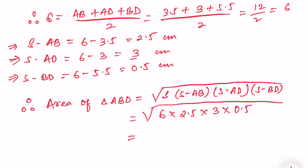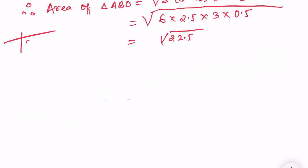If you find out the area, S here is given to be 6 into S minus AB is 2.5 into S minus AD is 3 into S minus BD is 0.5. Let me multiply all this number. So 18 into 1.25, it will be 22.5. If you multiply all this number, you are going to get 22.5 root. So find the square root of 22.5.